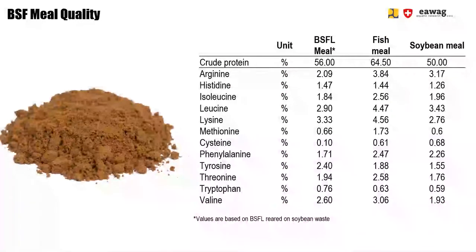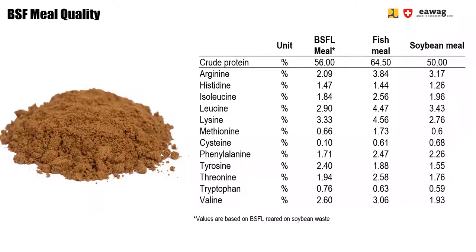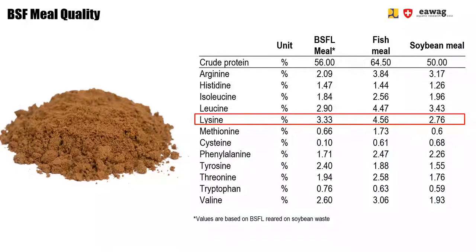Here you see again the amino acid profile of BSF Meal compared to fish meal and soybean meal. Amino acids are the building blocks of proteins and are important when formulating feed for animals. Each animal requires certain amounts of different amino acids. For example, fish meal contains a little more lysine than BSF Meal, whereas soybean meal contains less lysine. So it's important to check that the feed you're formulating still meets the requirements for your specific animal.